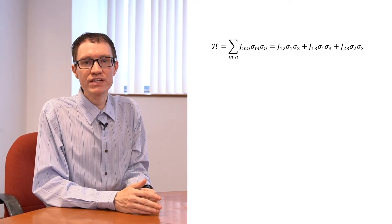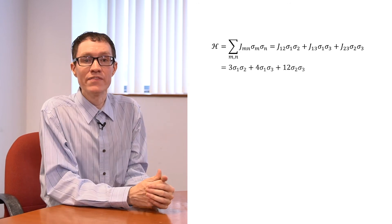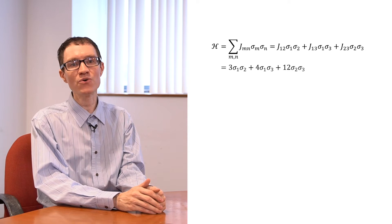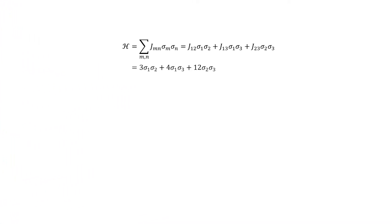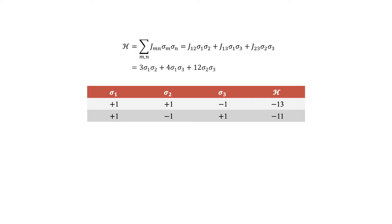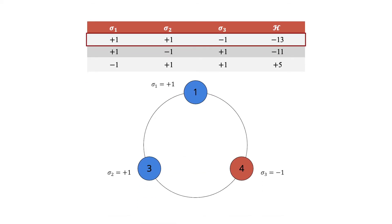The sigmas will be either +1 or −1 when the system is solved, and the system is solved when the Hamiltonian is minimized. There are only three possible ways of partitioning this particular set, so let's find the Hamiltonian in each of the three cases. Putting sigma_1 and sigma_2 in the same partition and sigma_3 in a different partition gives a Hamiltonian of −13. Putting sigma_2 in a different partition gives −11. And if sigma_1 is the one in a different partition, the Hamiltonian is +5. The minimum Hamiltonian is −13, corresponding to sigma_1 and sigma_2 in the same partition and sigma_3 in the other. Coloring +1 cells blue and −1 cells red, we can see that this partitioning is correct.